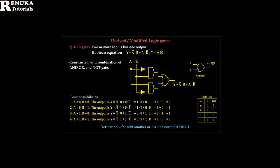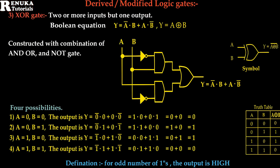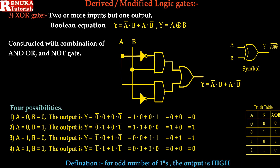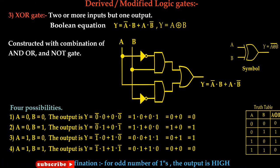The last derived gate is the XOR gate. It has two or more inputs and only one output. The Boolean equation is Y equal to A complement dot B plus A dot B complement, so Y equal to A XOR B. This gate can be constructed using a combination of AND, OR, and NOT gates. From the Boolean equation, the logic diagram is built: A is connected to a NOT gate, and NOT A output is ANDed with B to give A complement dot B. For the second product, A is directly connected to an AND gate and B is complemented, giving A dot B complement. Outputs of both AND gates are ORed to give A XOR B at the output.